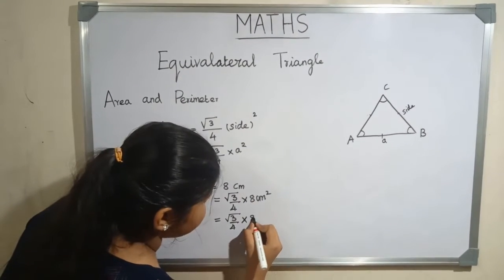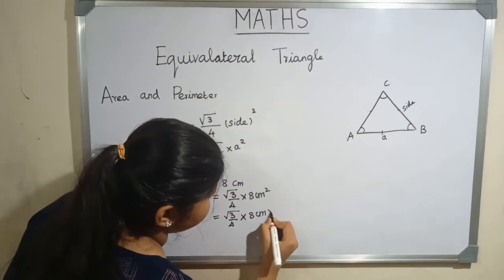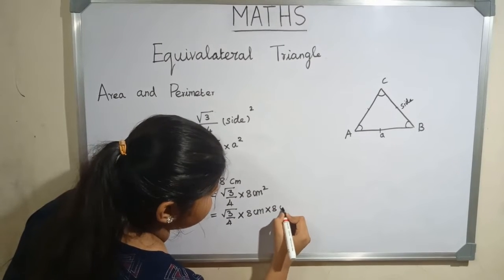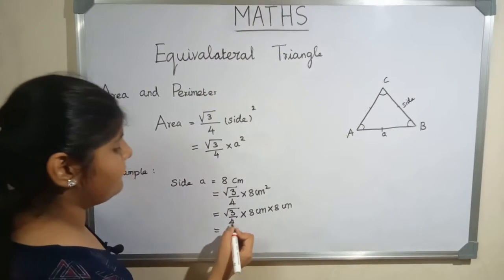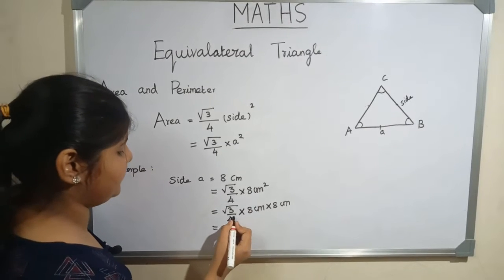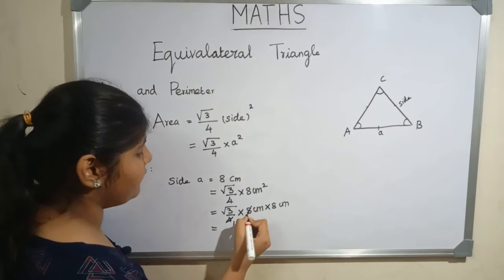Here 4 and 8 get cancelled. 4 ones are 4, 4 twos are 8. Root 3 multiply 2 multiply 8 centimeters.